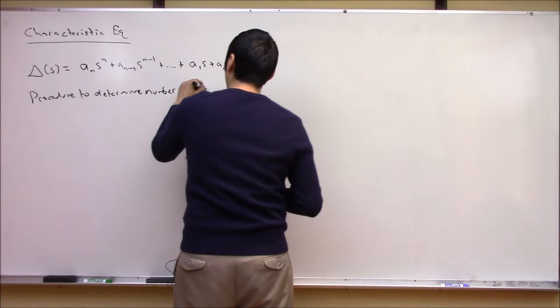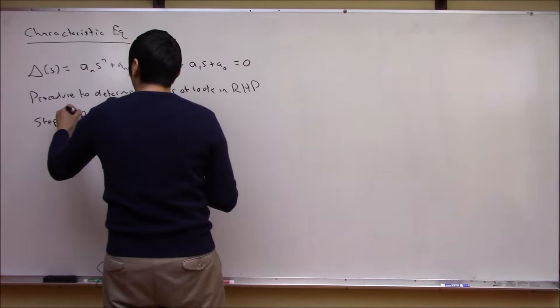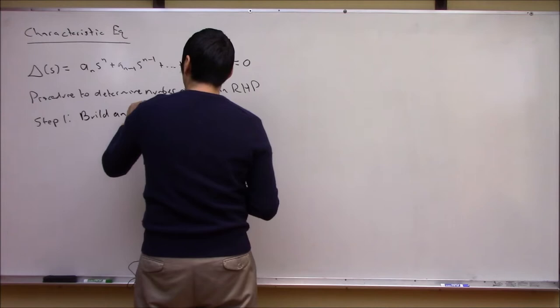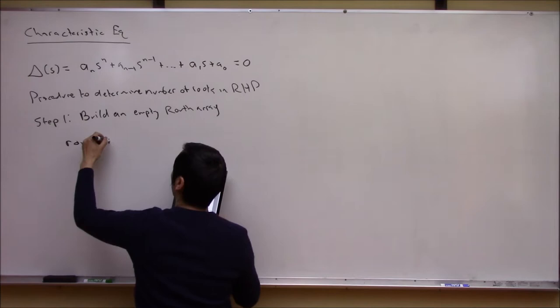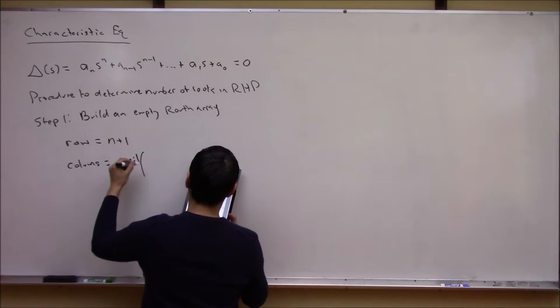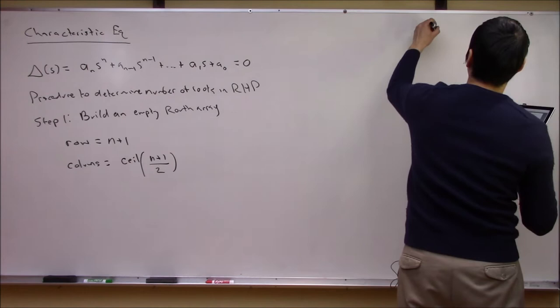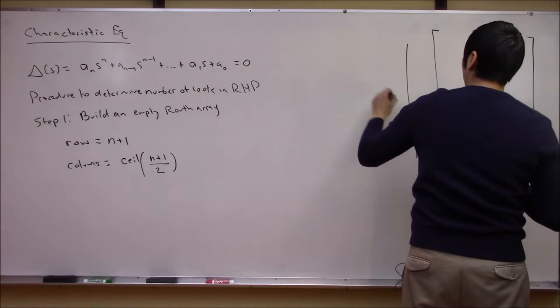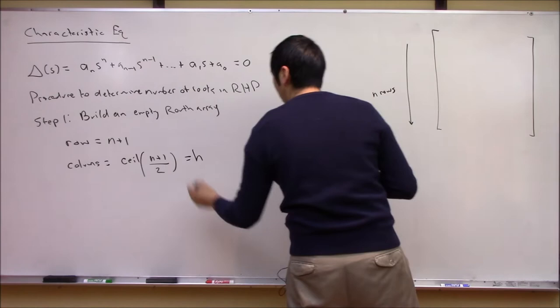Step 1 is to build an empty Routh array, which is really a matrix. The number of rows is n + 1 (the order of the polynomial plus 1), and the number of columns is given by the ceiling function of (n + 1) / 2. So you build an empty matrix with n + 1 rows and h columns, where h = ceiling((n+1)/2).